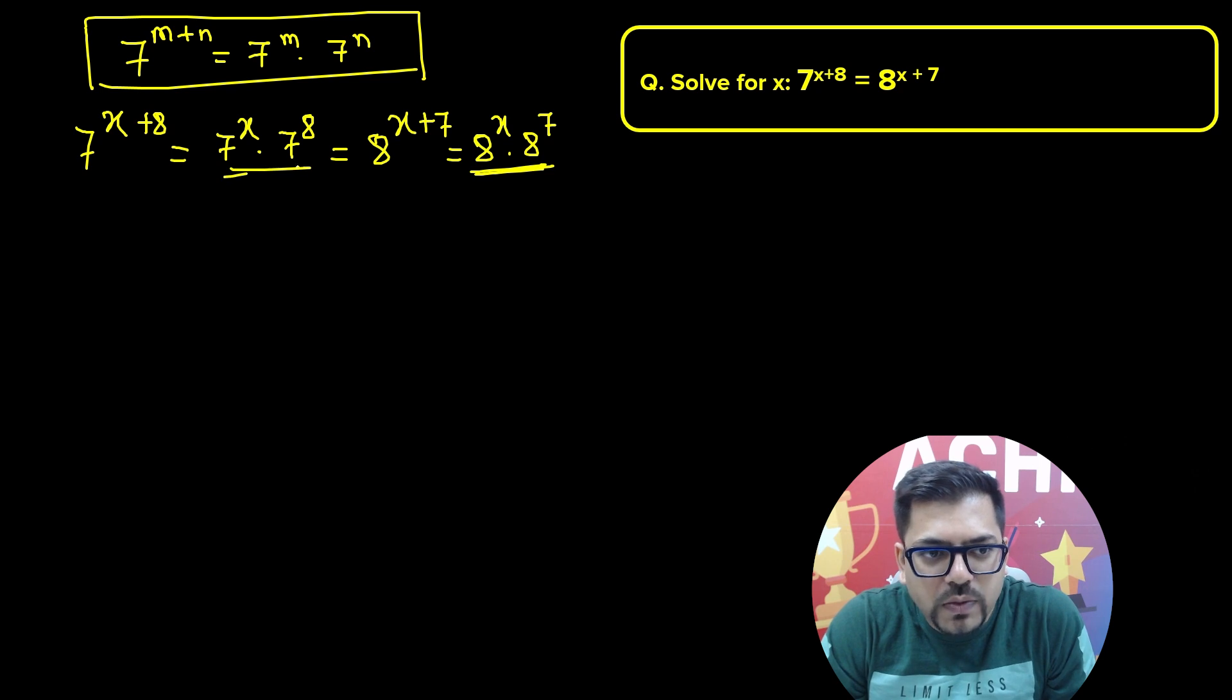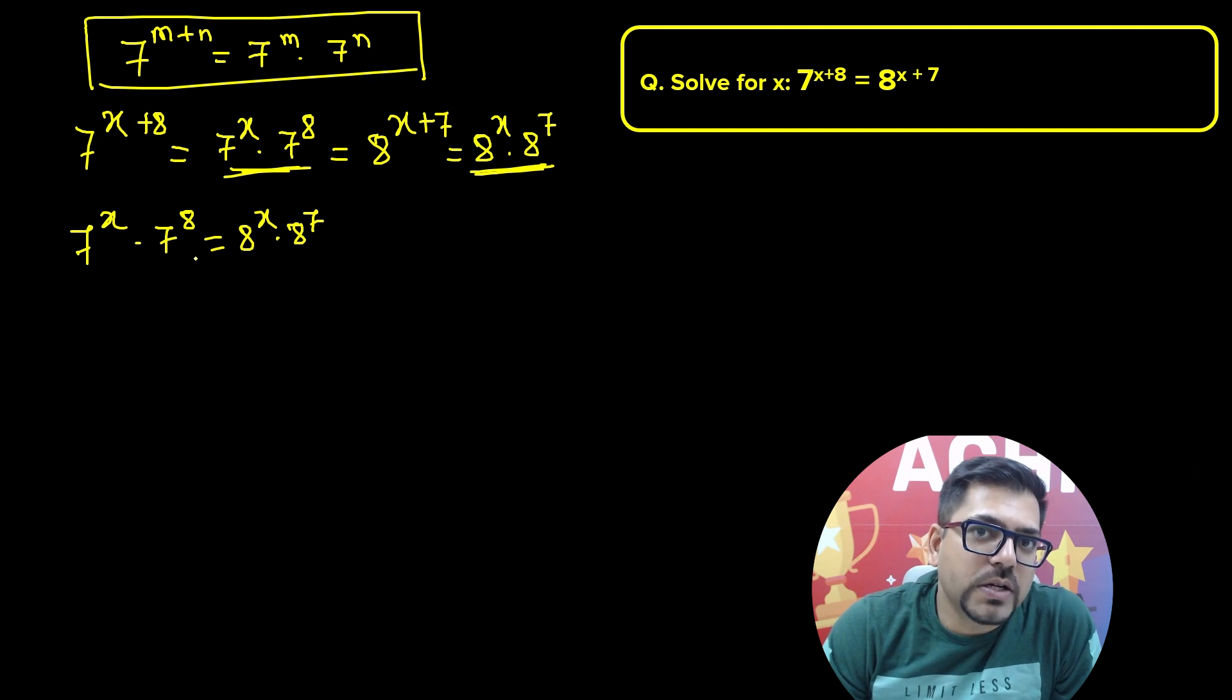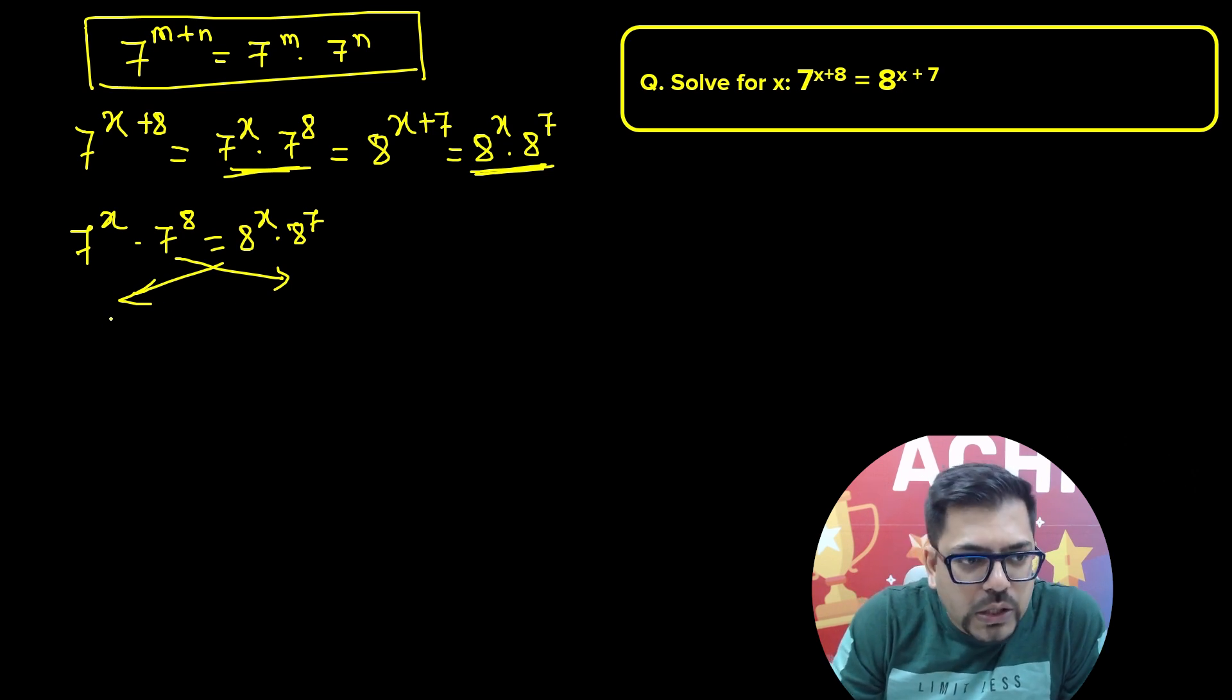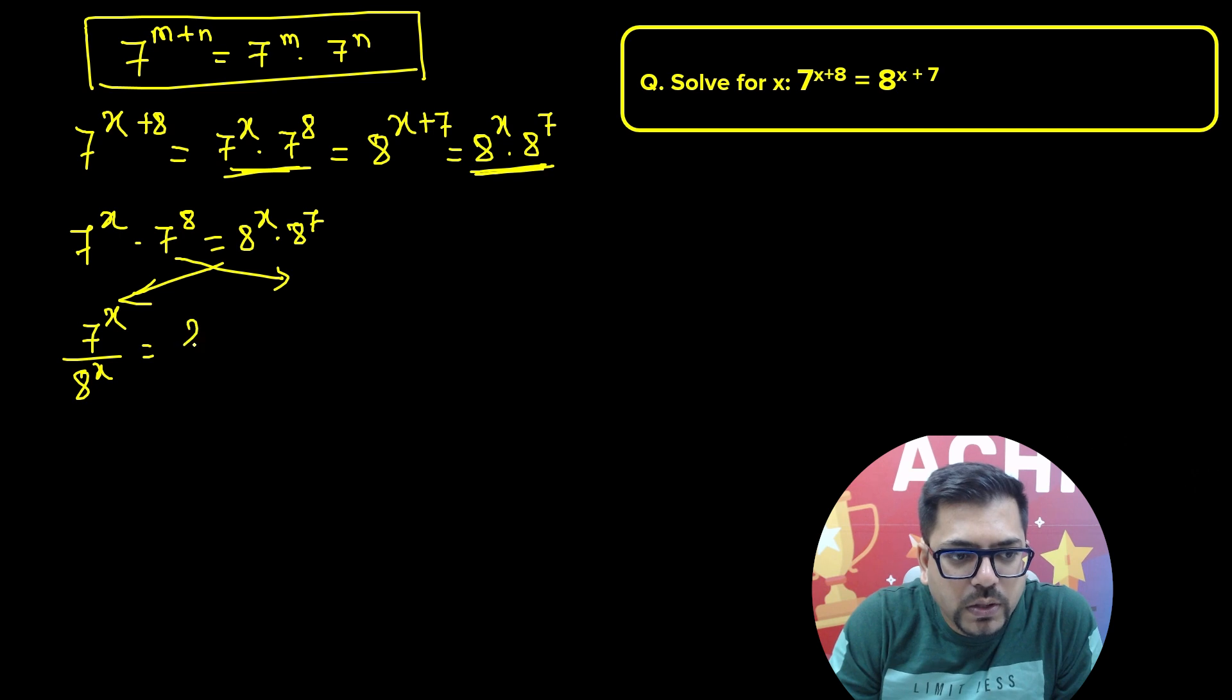So I'll take this one and this one together. We have 7 raised to power x into 7 raised to power 8 equals 8 raised to power x into 8 raised to power 7. Now I'll send all the variable terms to one side and the constant terms to the other side. So 7 raised to power x divided by 8 raised to power x equals 8 raised to power 7 divided by 7 raised to power 8.